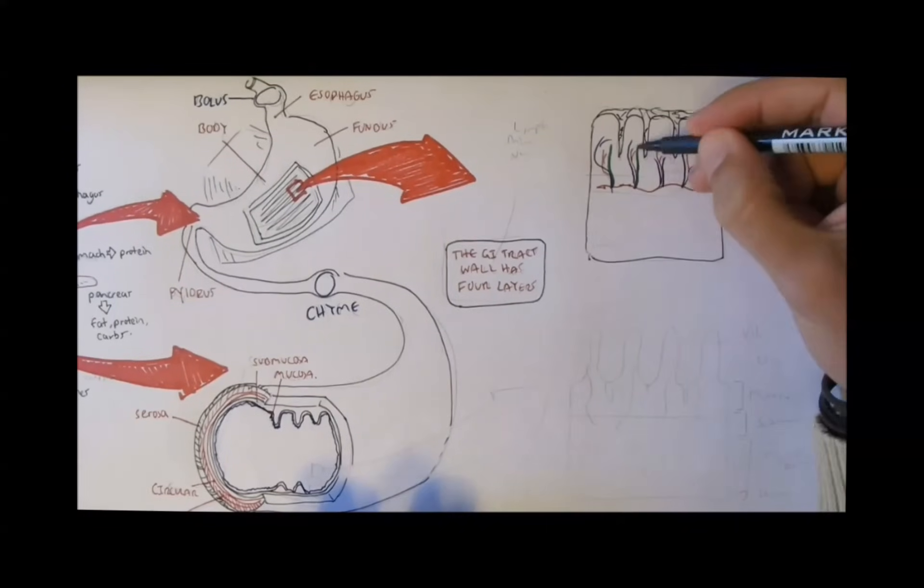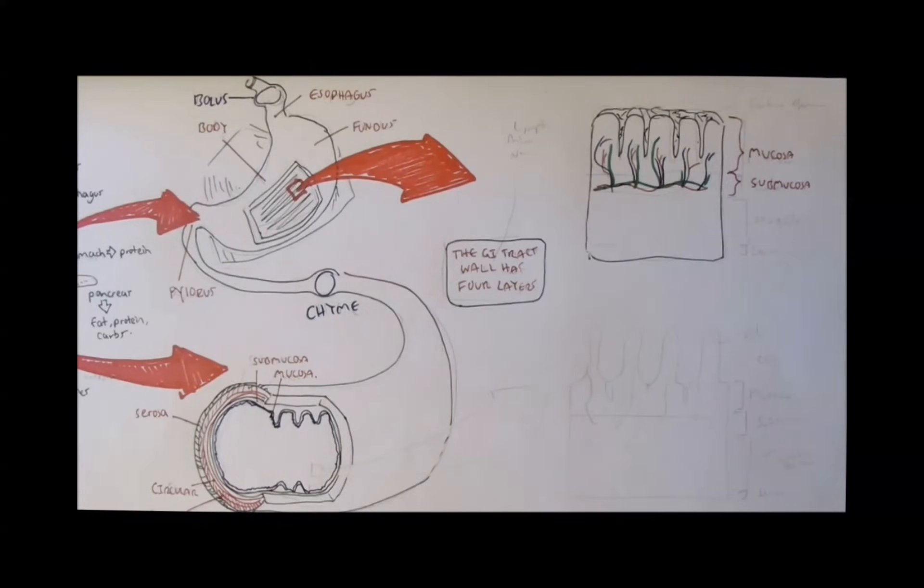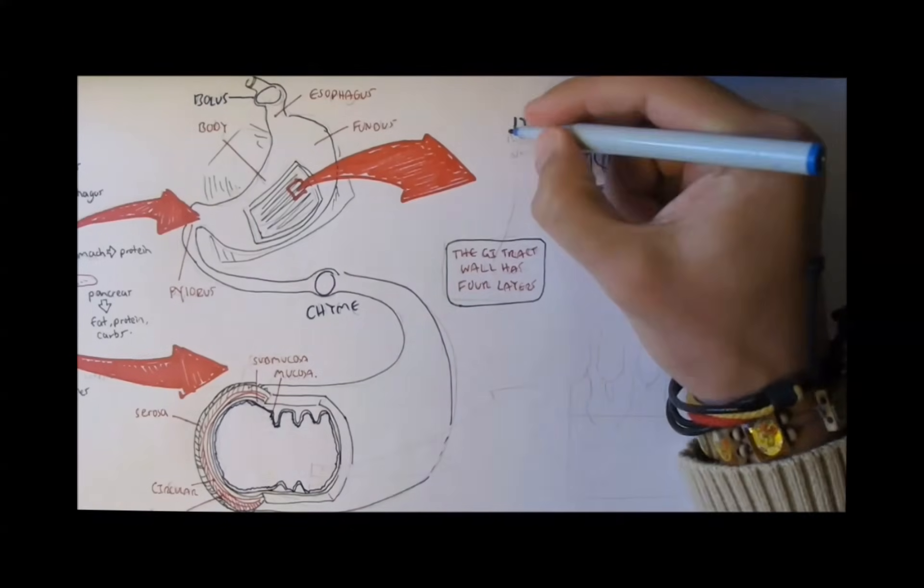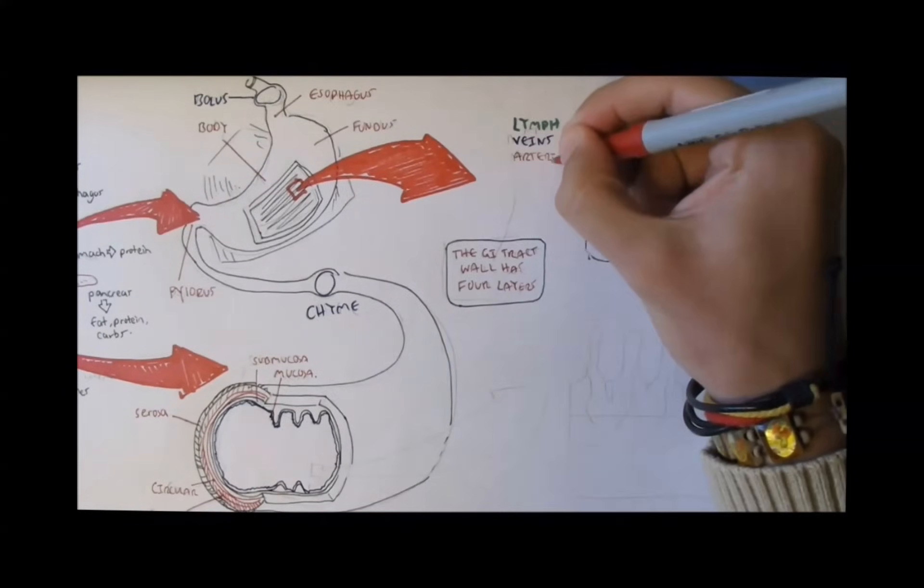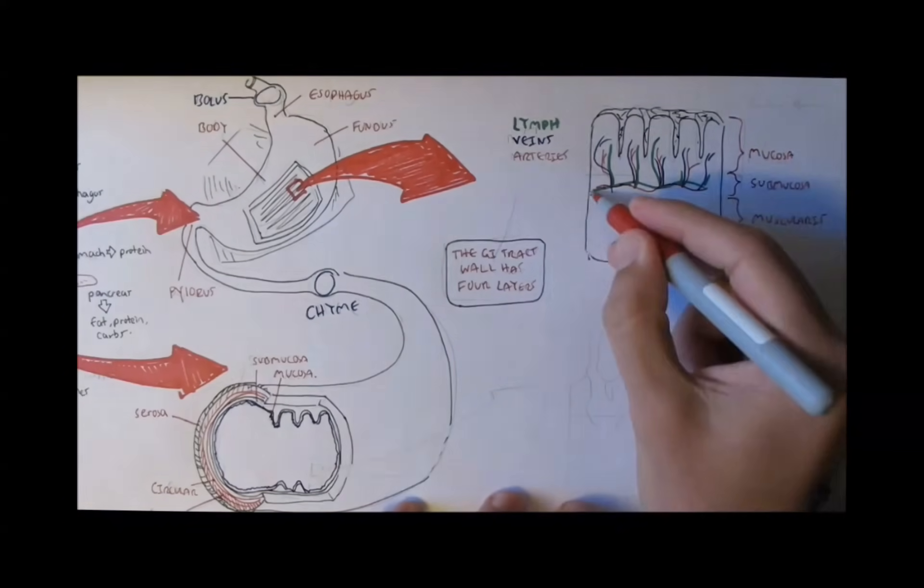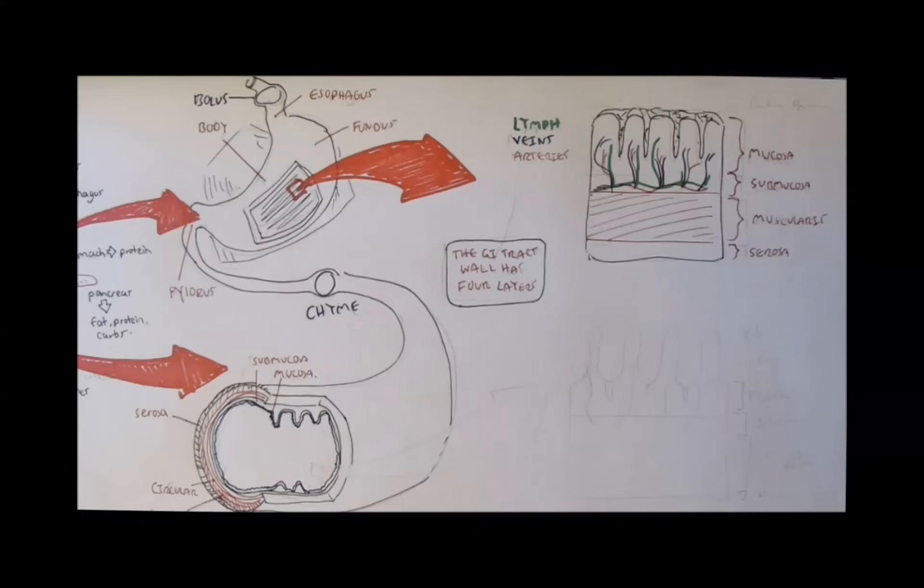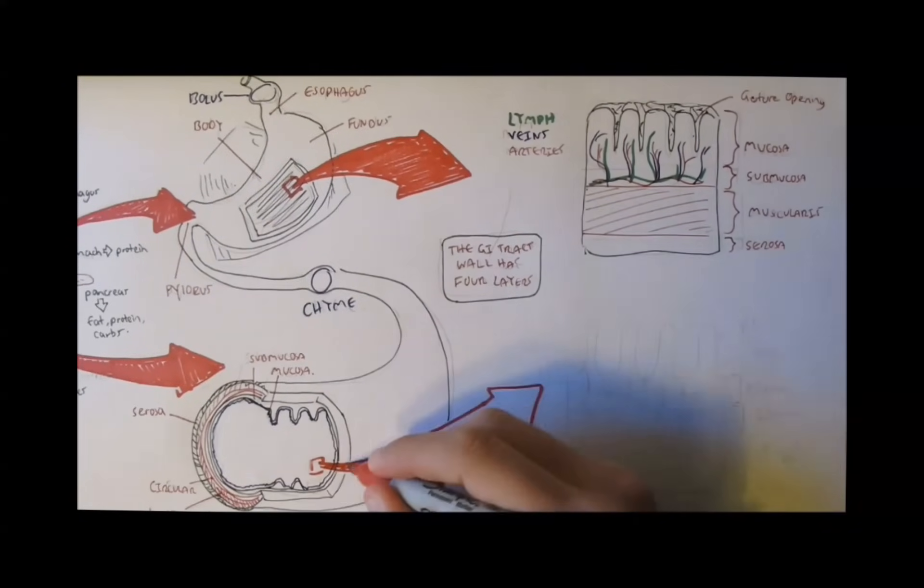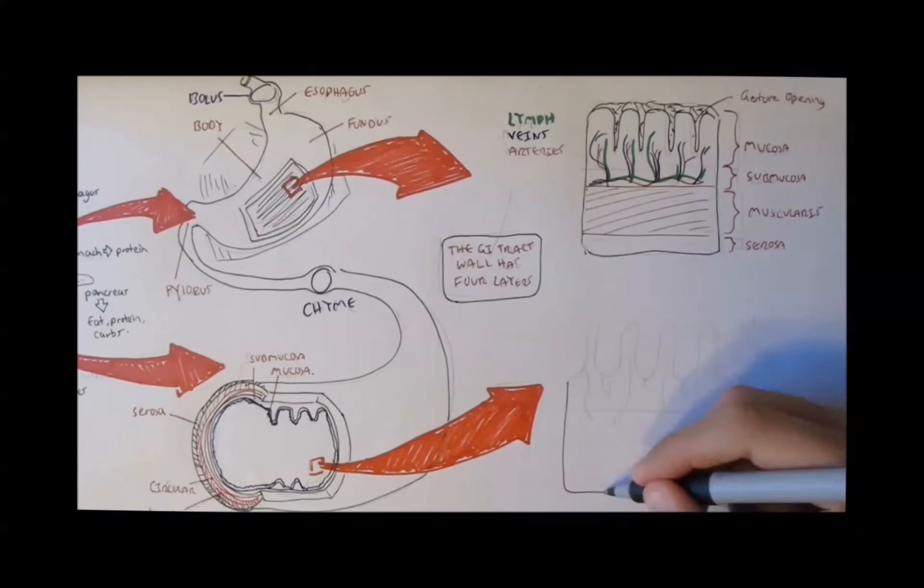Next we have the submucosa, which is, sub means under, so under the mucosa. And it contains the lymph, veins, and arteries. Then there is the smooth muscle. The stomach actually has three different smooth muscles so that it can mix the food up. Finally we have the serosa, the outer layer.